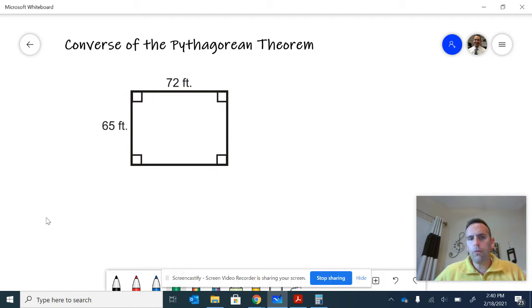So from the Pythagorean Theorem, we know that if we have a right triangle, then we get a squared plus b squared equals c squared. Well, in the converse, what we're doing is checking a squared plus b squared equals c squared to determine if we have a right triangle.